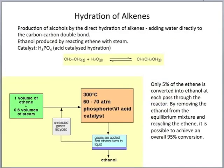Let's consider the hydration of alkenes. This is how we produce alcohols by direct hydration of alkenes, meaning we add water directly to the carbon–carbon double bond. To produce ethanol, we react ethene with steam using an acid catalyst — this is often referred to as acid-catalysed hydration. Ethene gas reacts with steam (H₂O gas) to produce ethanol, and this reaction is reversible. Only about 5% of the ethene is converted into ethanol at each pass through the reactor.